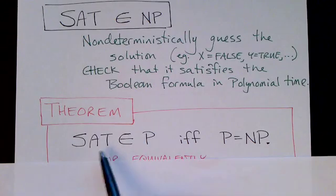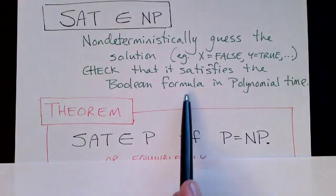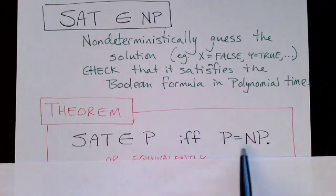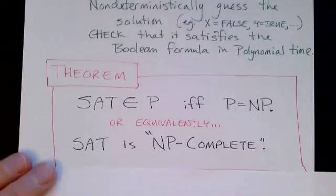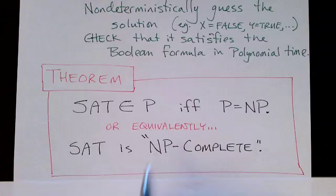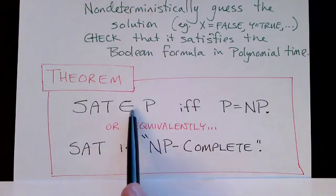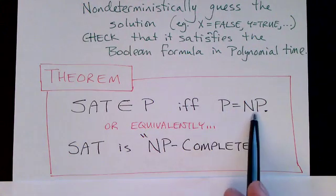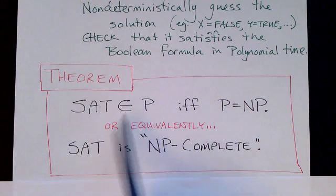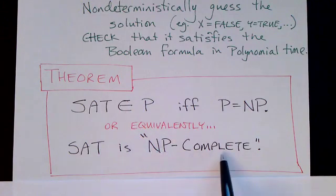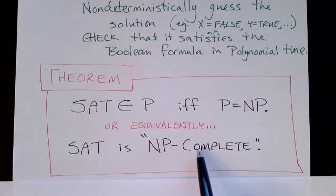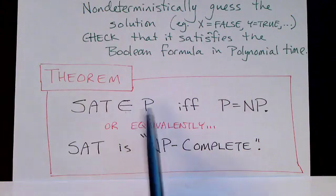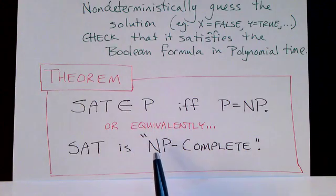But more importantly, if we can figure out a way to solve the SAT problem in polynomial time on a deterministic Turing machine, it means that P equals NP. So remember our definition of NP-Complete. Any problem that's in NP-Complete means that if we find a polynomial time solution for it, it proves that P equals NP. So by that definition, SAT is an NP-Complete problem. In fact, SAT was the first NP-Complete problem and it was this work that introduced the idea of NP completeness.